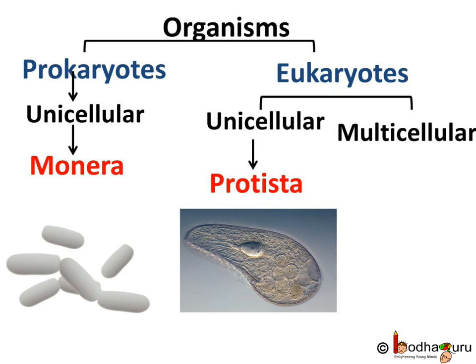Next, based on the number of cells, whether the organism is unicellular or multicellular. Unicellular prokaryotes belong to kingdom Monera and unicellular eukaryotes belong to kingdom Protista.